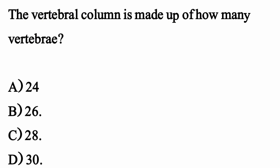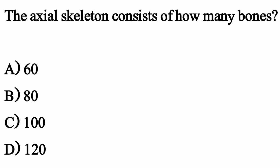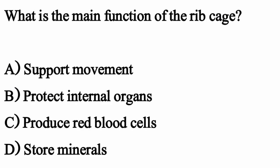The vertebral column is made up of how many vertebrae? The correct option is Option B: 26. The axial skeleton consists of how many bones? The correct option is Option B: 80. What is the main function of the rib cage? The correct option is Option B: Protect internal organs.